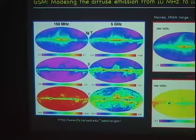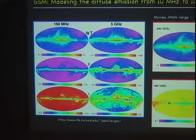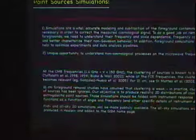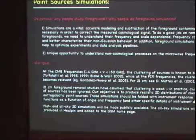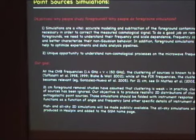But there are other foregrounds that are important for 21 centimeters, specifically point sources. So then we enter the second step: how can you simulate point sources and later add them to this GSM model? And later on, we are going to also add polarization, make rotation measure maps and things, and add all of that to this data.